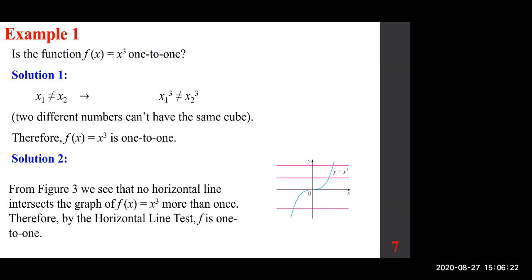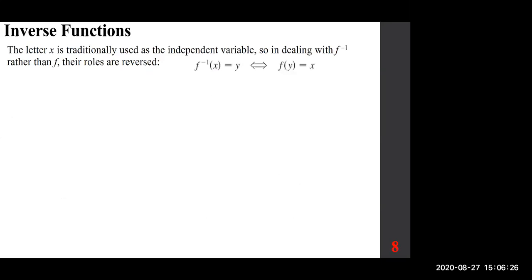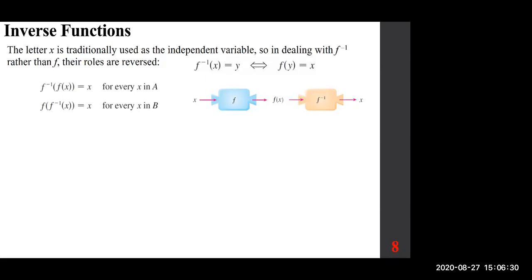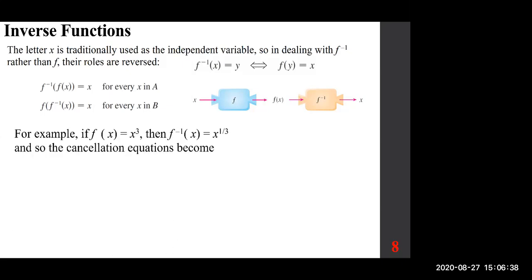Two functions are inverse of each other — look at the function machines one after another. A simple example: x cubed. Its inverse is x to the power of one-third, or the cube root of x. If somebody says these are inverse functions, you have to prove it by looking at their composite function. You don't have to do both, but it's good practice. Finding f inverse of f, or f of f inverse, either one should give you x.